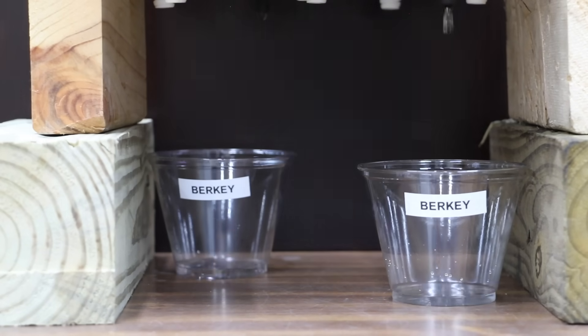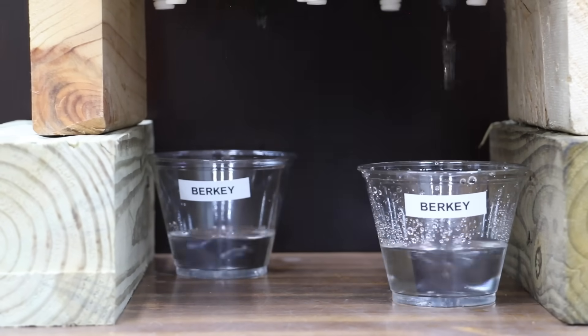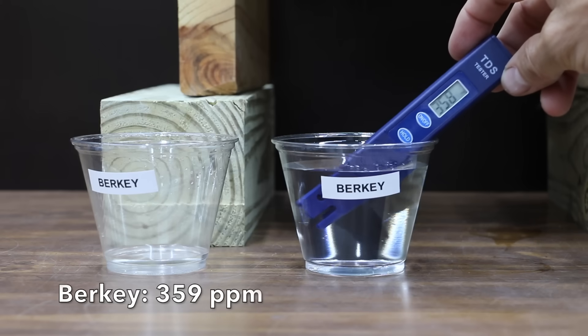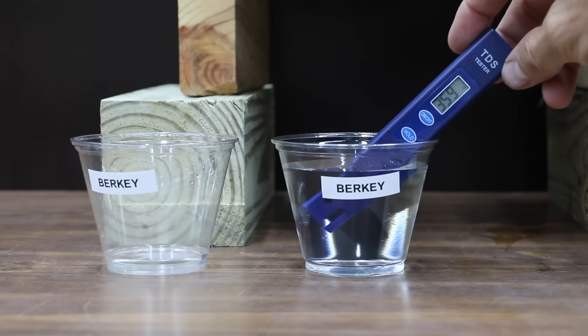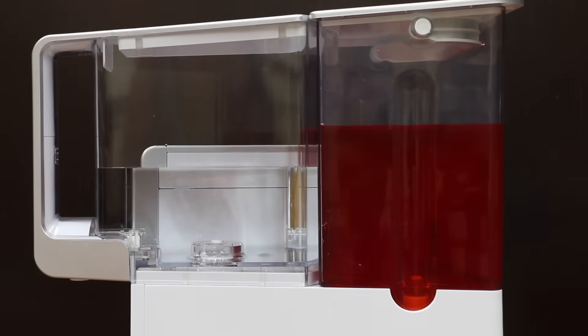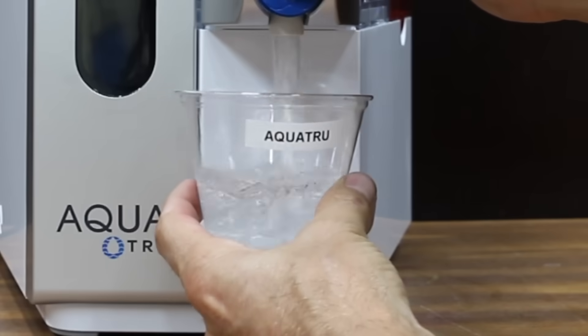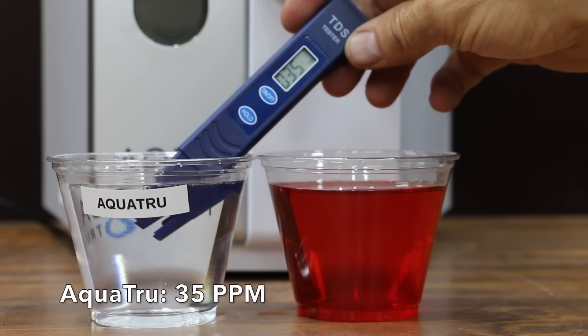The Berkey did by far the best job yet at improving the appearance of the water. It pretty much left all the dissolved solids in the water, though, at 359 parts per million. And the AquaTrue did by far the best job yet at improving the appearance of the water. 35 parts per million, which is just about as good as the Zero Water.